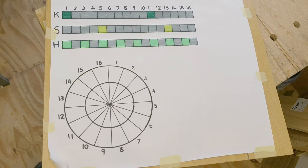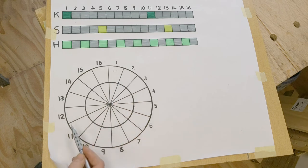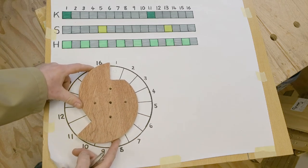The lowest part of the cam wheel on the kick drum is on the 1 and the 11 which makes our kick drum cam wheel look like this.